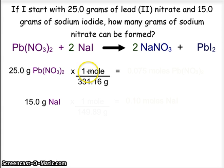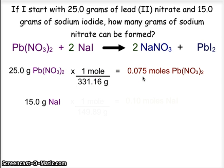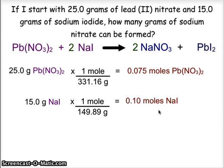The Pb(NO3)2, or lead nitrate, becomes 0.075 moles, using the gram formula mass of 331.16 — we convert 25 grams to moles and get 0.075 moles of lead nitrate. Likewise, we take the second reactant, sodium iodide, and using its gram formula mass of 149.89, we find that we have 0.10 moles of sodium iodide.